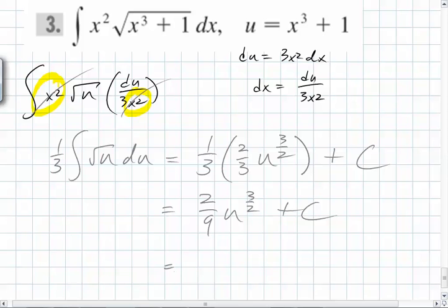But what does u equal? Because you know that this is 1 half power right there. 1 half add 1, what do you get? 3 halves. You have to drop that to the front, but there is no 3 halves out front, so what do you have to cancel it with? 2 thirds. So what do we end up with? 2 ninths times x cubed plus 1 to the 3 halves plus c.